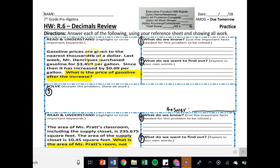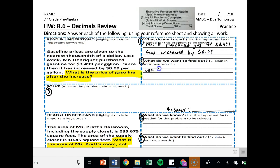It says gasoline prices are given to the nearest thousandths of a dollar. Last week, Mr. Henriquez purchased gasoline for $3.49, so almost $3.50 per gallon. Since then it has increased by nine cents per gallon. What is the price of gasoline after the increase? Notice how they give you that extra nine. Gasoline companies are one of the few companies that will do that. And then it's going to be an increase of nine cents. So we can say Mr. H purchased gas for $3.49. And the gas went up or gas increased by nine cents. What do we want to find out? We want to find out what's the new price of gas.